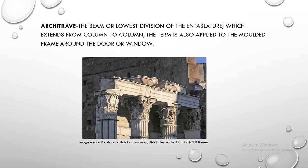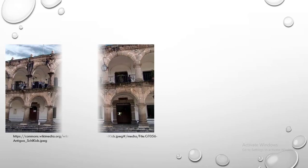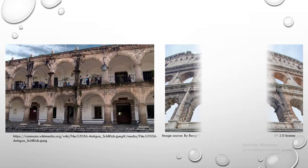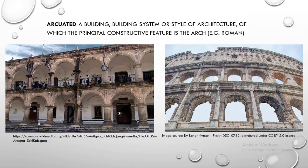Architrave. Architrave is the beam or lowest division of the entablature, which extends from column to column; the term is also applied to the molded frame around a door or window. Arcuate. Arcuate is a building system or style of architecture of which the principal constructive feature is the arch, e.g. Roman.